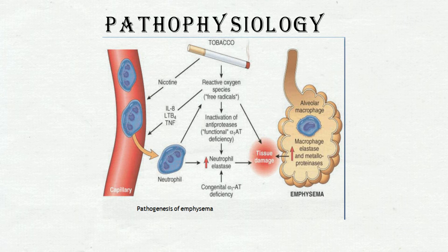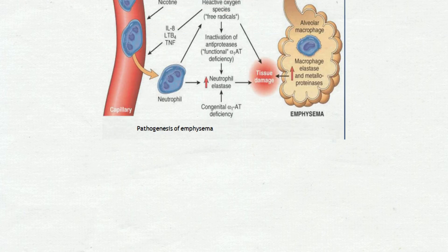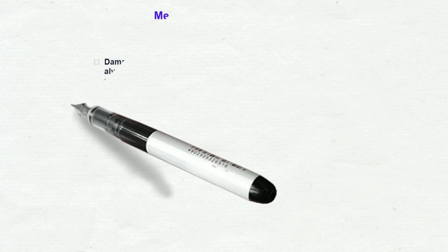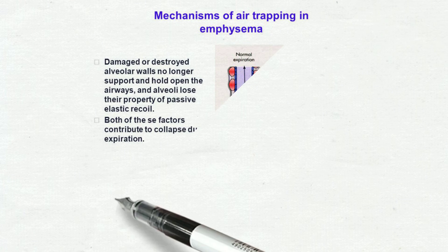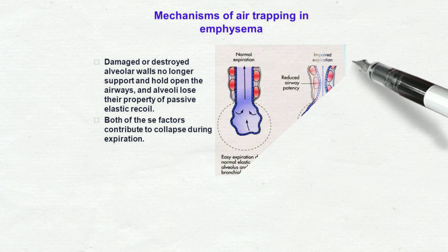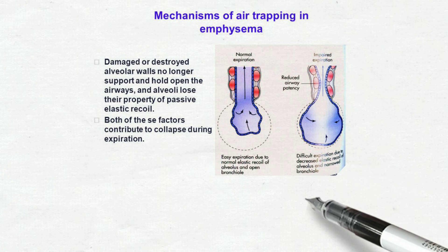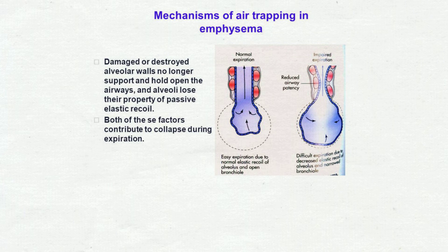Congenital alpha-1-antitrypsin deficiency also leads to increased neutrophil elastase, thus causing tissue damage. This theory is called the antitrypsin-protease theory. Another theory is the air trapping theory. Damaged alveolar walls no longer support and hold open the airways, and alveoli lose the properties of passive elastic recoil. Both of these factors contribute to airway collapse during expiration.